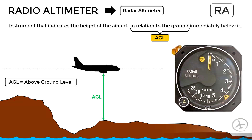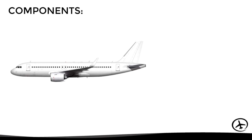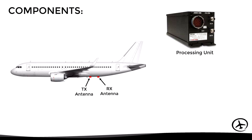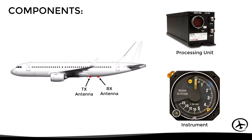The basic components of a radio altimeter system are two antennas located at the bottom of the fuselage — one transmitting and the other receiving — a central processing unit, and finally the instrument or indicator in the cockpit.